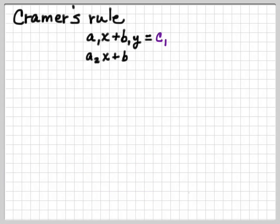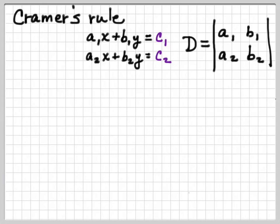So Cramer's Rule. If we have these two equations, and I'm going to write the answers to each one of them, c sub 1 c sub 2 in purple, so that you can kind of see the difference. We're going to call the determinant that we get just from taking the coefficients of the two equations determinant D. And that's a sub 1 b sub 1, a sub 2 b sub 2.